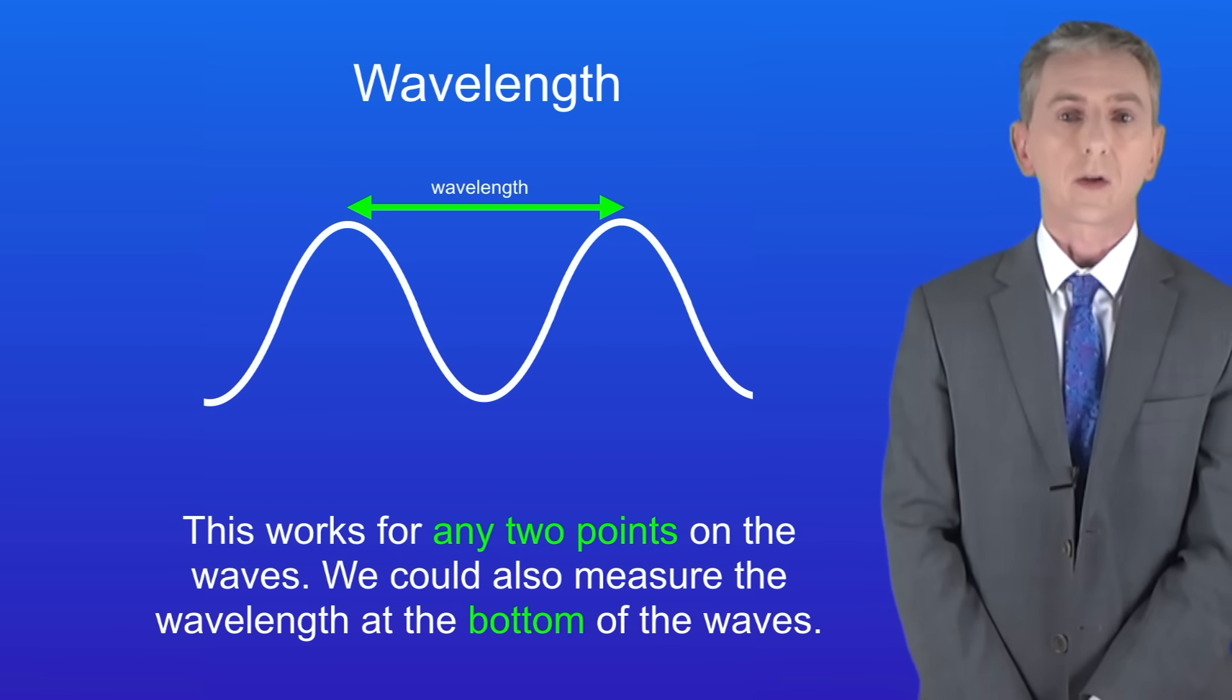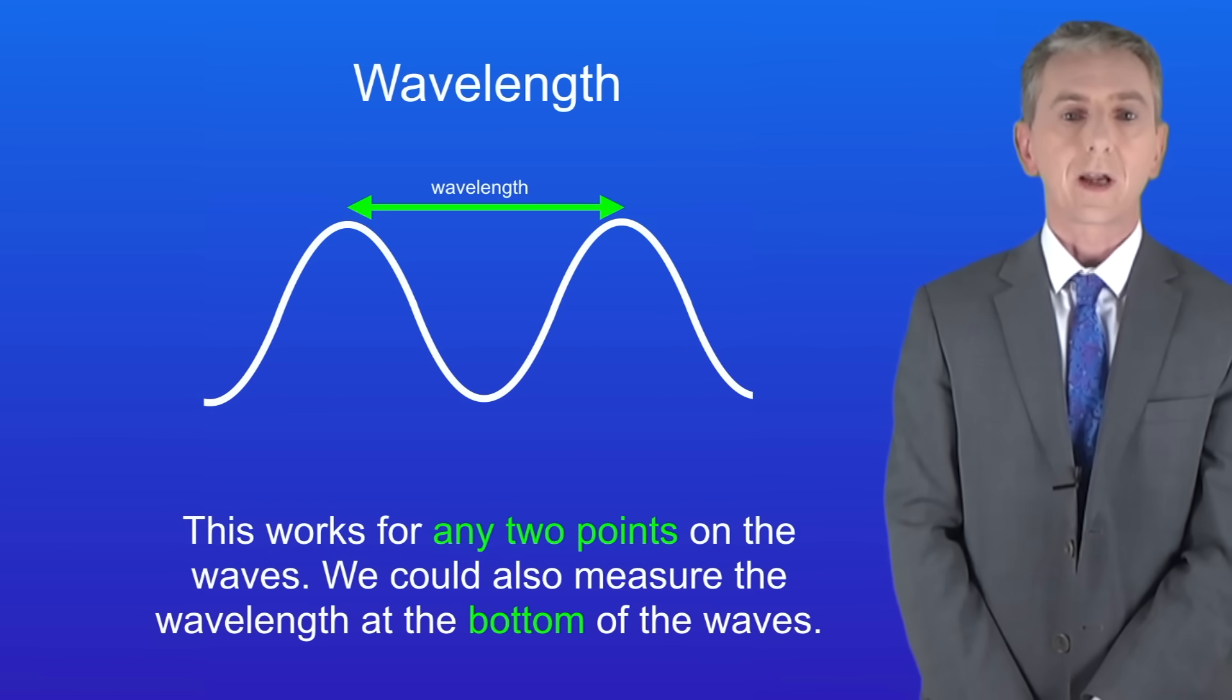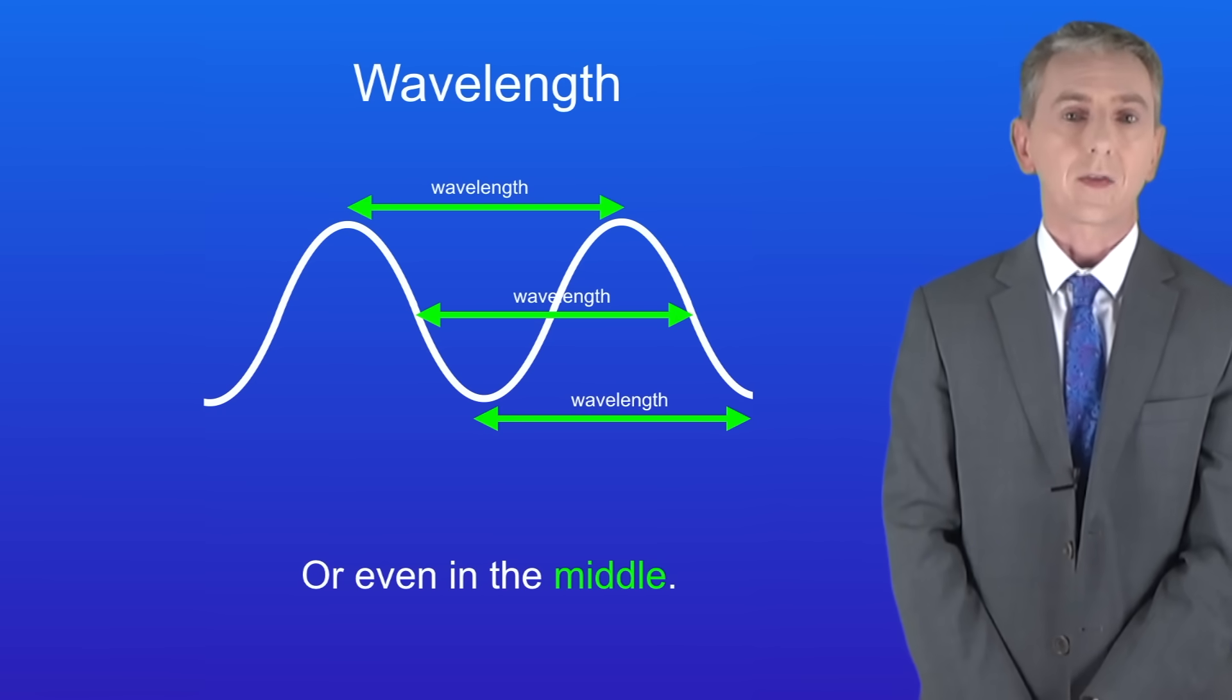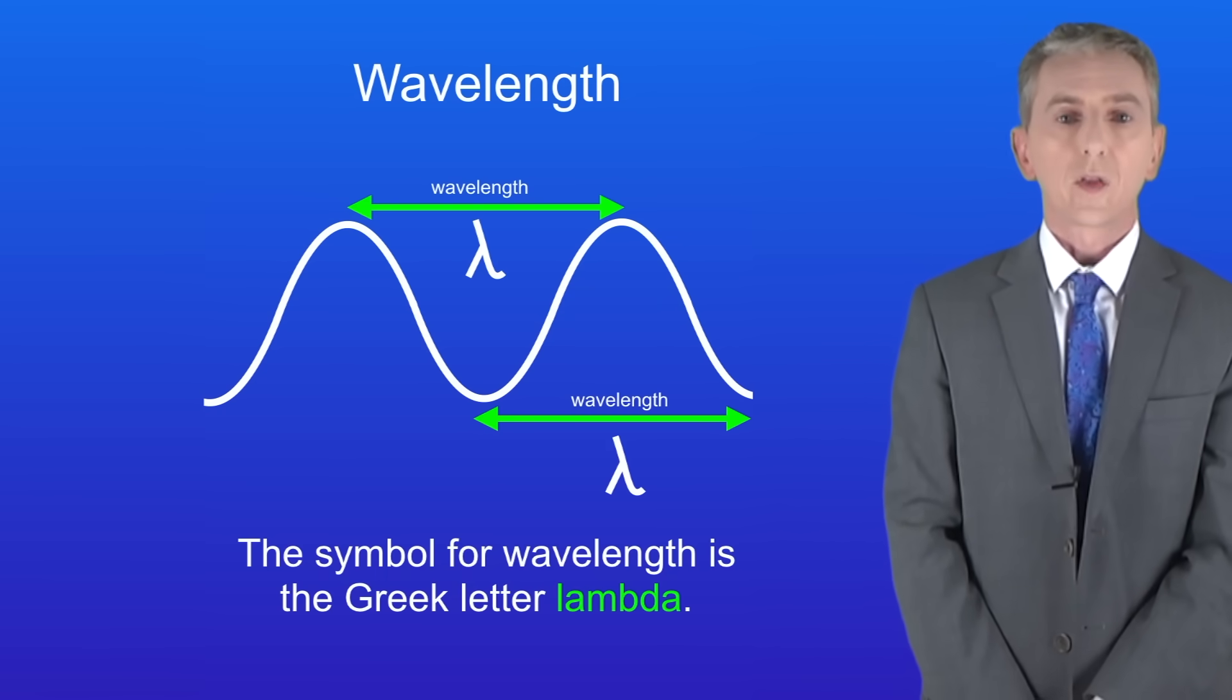Now this works for any two points on the waves, so we could also measure the wavelength at the bottom of the waves like this, or even in the middle like this. Now the wavelength has a special symbol which I'm showing you here. This is the Greek letter lambda, and we'll be seeing that again in the next video.